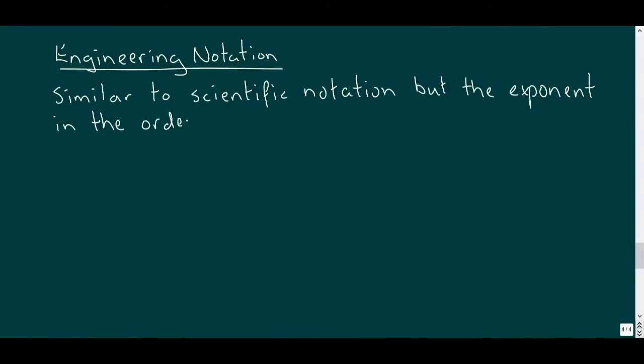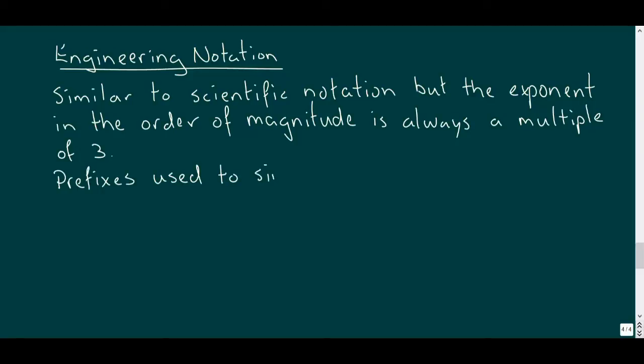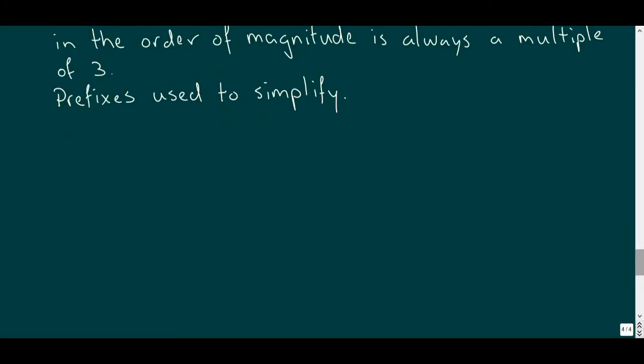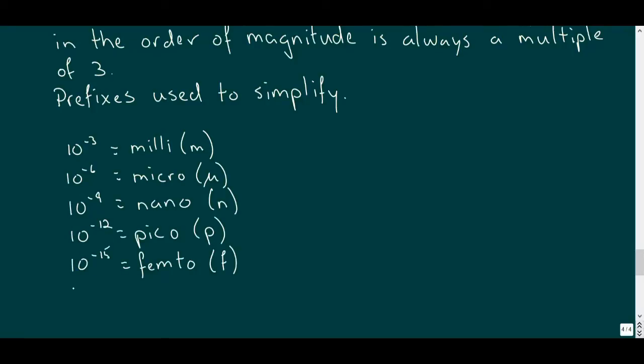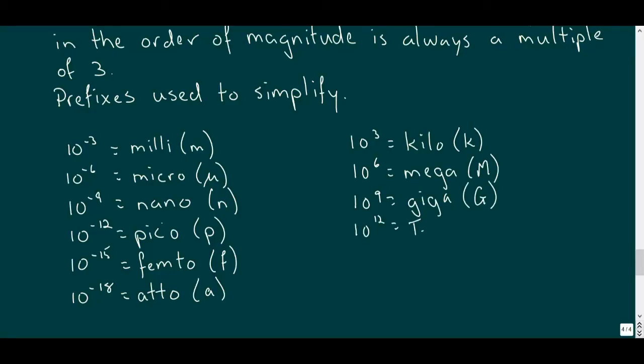A variant of this is engineering notation, which is similar to scientific notation, except the exponents are multiples of 3. This variant gives rise to the prefixes we use to simplify notation, where 10 to the power of minus 3 is written as milli, denoted by the letter m, and micro, denoted by the Greek letter mu, is 10 to the power of minus 6. 10 to the minus 9 is nano, 10 to the minus 12 is pico, 10 to the minus 15 is femto, and 10 to the minus 18 is atto. For larger numbers, kilo is 10 to the power of 3, while mega is 10 to the power of 6. Giga is 10 to the power of 9, terra is 10 to the 12th power, and peta is 10 to the power of 15. An exception to the power of 3 condition is centi, which is 10 to the power of minus 2.